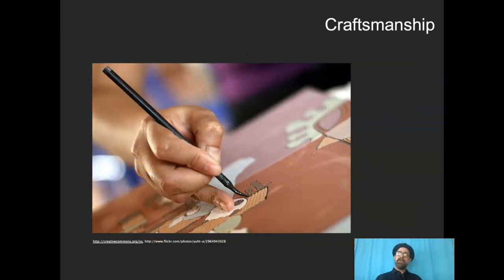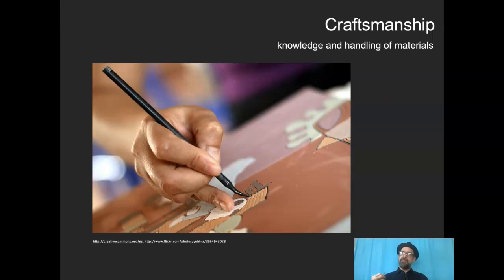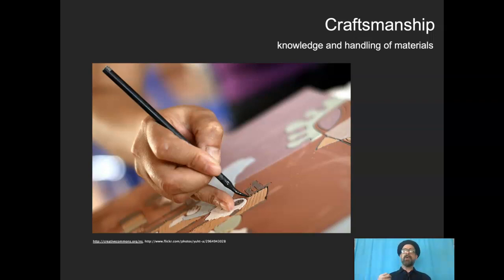Craftsmanship — we hear that word thrown around a lot, and it's really important, especially for young artists and designers to develop a sense of craft. That craftsmanship comes from the knowledge and handling of materials — whether that's a paintbrush and tubes of paint and a canvas, a mouse in your hand looking at a screen, or a chisel and a block of marble. Your knowledge of those materials and how you manipulate them will turn into craftsmanship. The more you work with these materials and understand how to get the best out of them, the more you're going to grow in your craft. The more you expose yourself to in terms of materials and techniques, the better you become as an artist, as a designer.